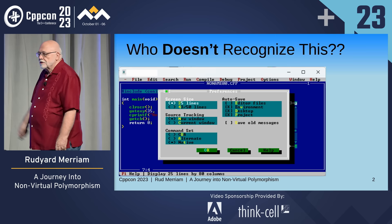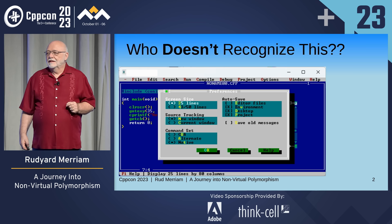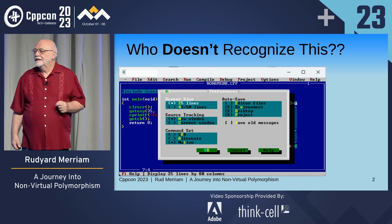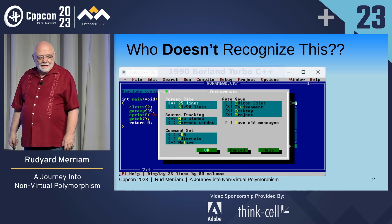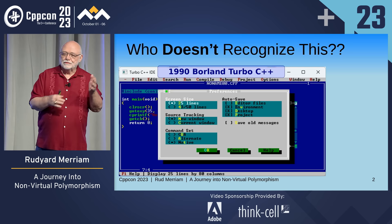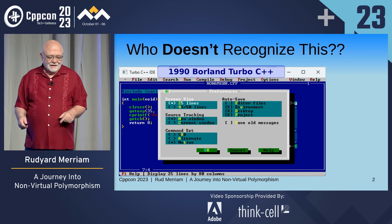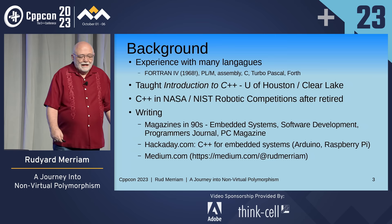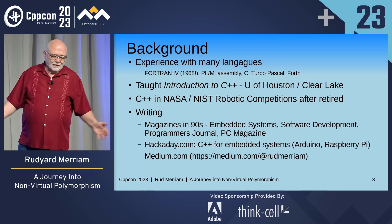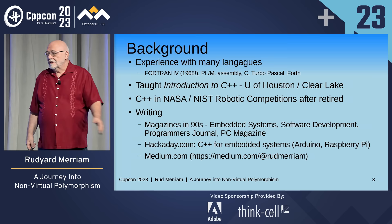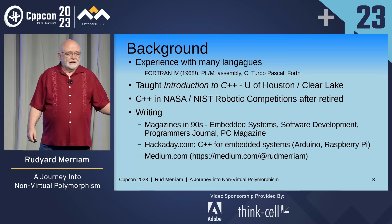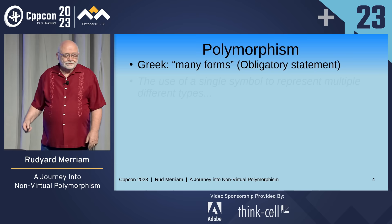My real journey with C++ started with this. Who doesn't recognize this screenshot? Not too many youngsters here — youngsters to me is anybody under 50. This was Borland's Turbo C++ released in 1990. In August of 1990, I was at the Hilton Waikiki reading the manuals from this. I was the spouse for a conference my ex-wife was attending, sitting by the poolside reading the books. Tough job, somebody's got to do it. General background: I started in 1968 with Fortran, taught C++ at University of Houston Clear Lake, used it in competitions for NASA and NIST, and done some writing in the 90s on Hackaday.com and currently on Medium.com.